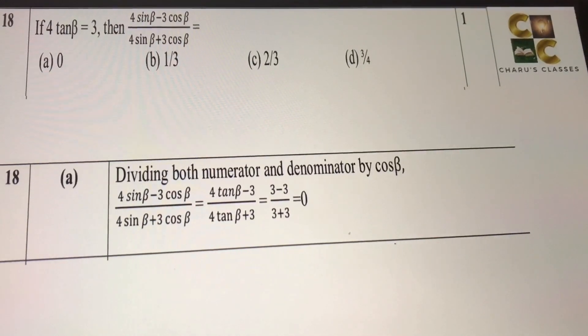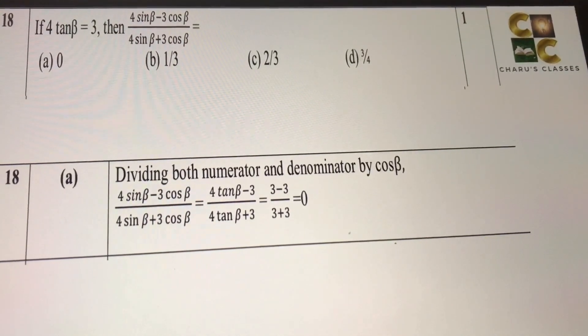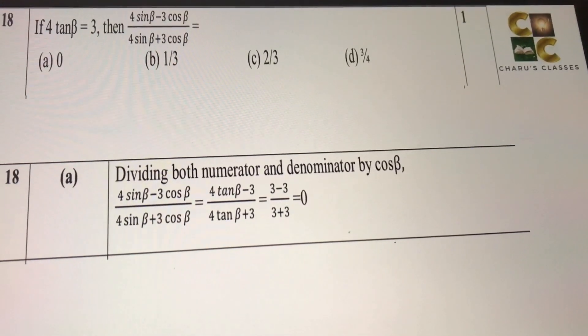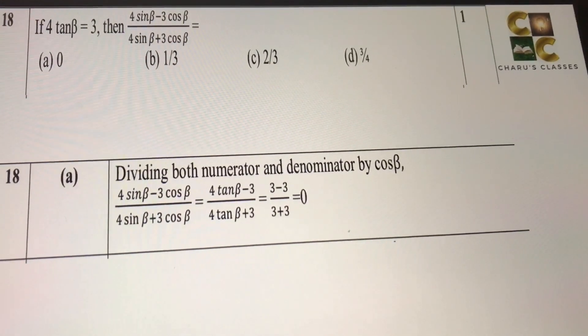And 4 tan beta is given to us as 3. So we just put the value. 3 minus 3 equal to, by 3 plus 3, which is coming as 0.